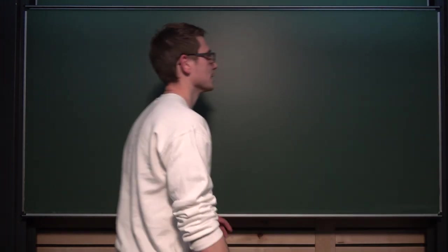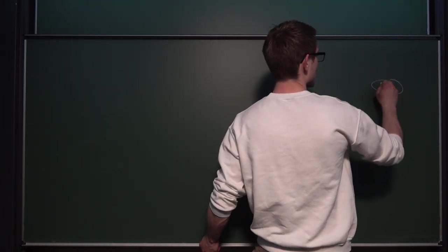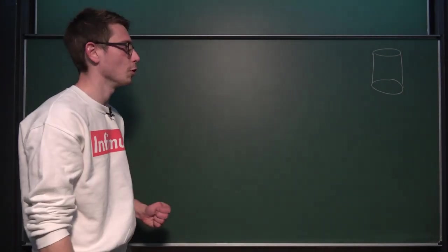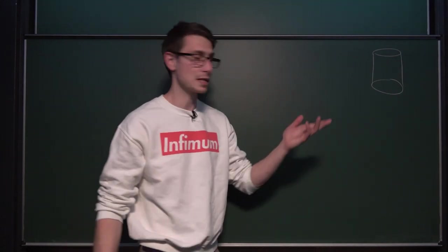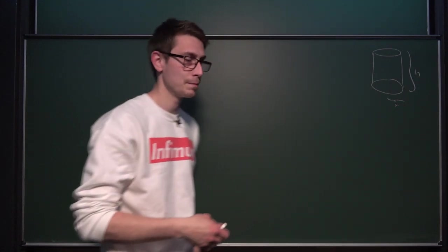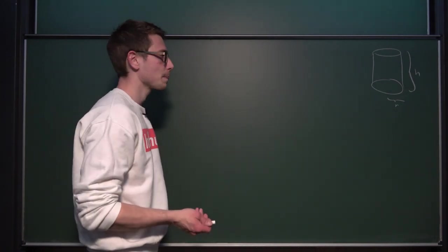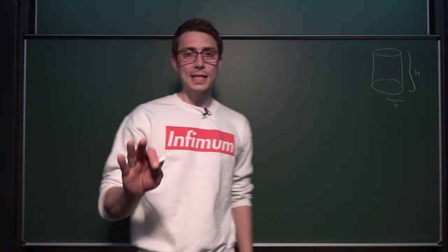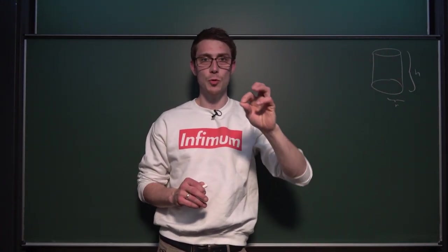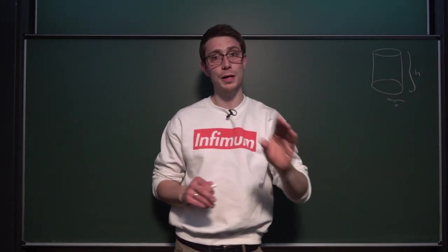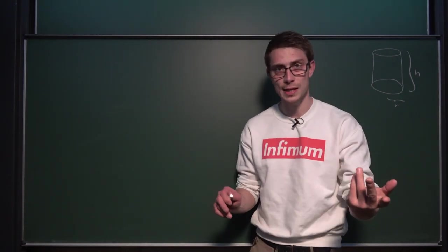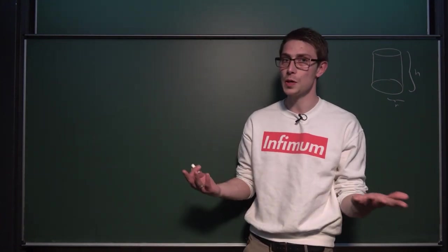Let us take a look at the cylinder first. What is a cylinder? It's basically just a stretched disc. It's a disc with volume. The two main characteristics which make up a cylinder are its height h and also its radius r. We are going to go with the radius here because it's more standardized. The original question is: can we optimize the cylinder such that it has a maximum amount of volume but a minimum amount of surface area? We need to construct a function for the surface area and then minimize it.